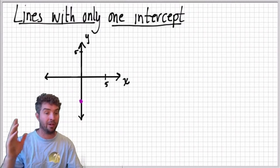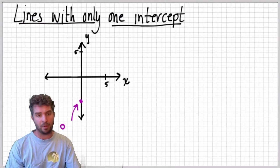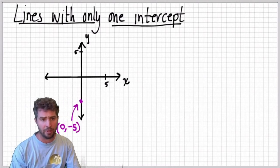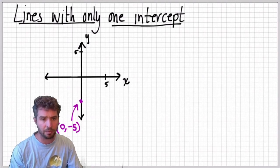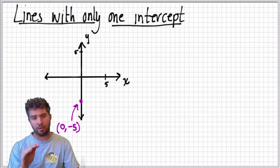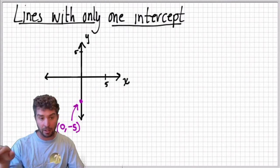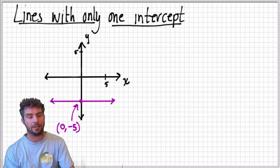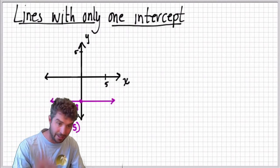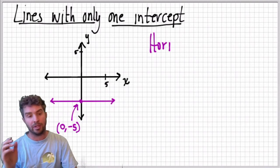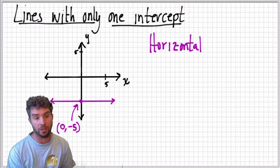The point that we're looking at right now, these axes have a scale, so it's 0, negative 5 is the point we're looking at. And we're going to draw a line through that that doesn't intercept the x-axis. So therefore it has to be parallel to the x-axis. It has to look like this. So if it's parallel to the x-axis, the x-axis is horizontal. So these lines with only a y-intercept are all going to be horizontal.